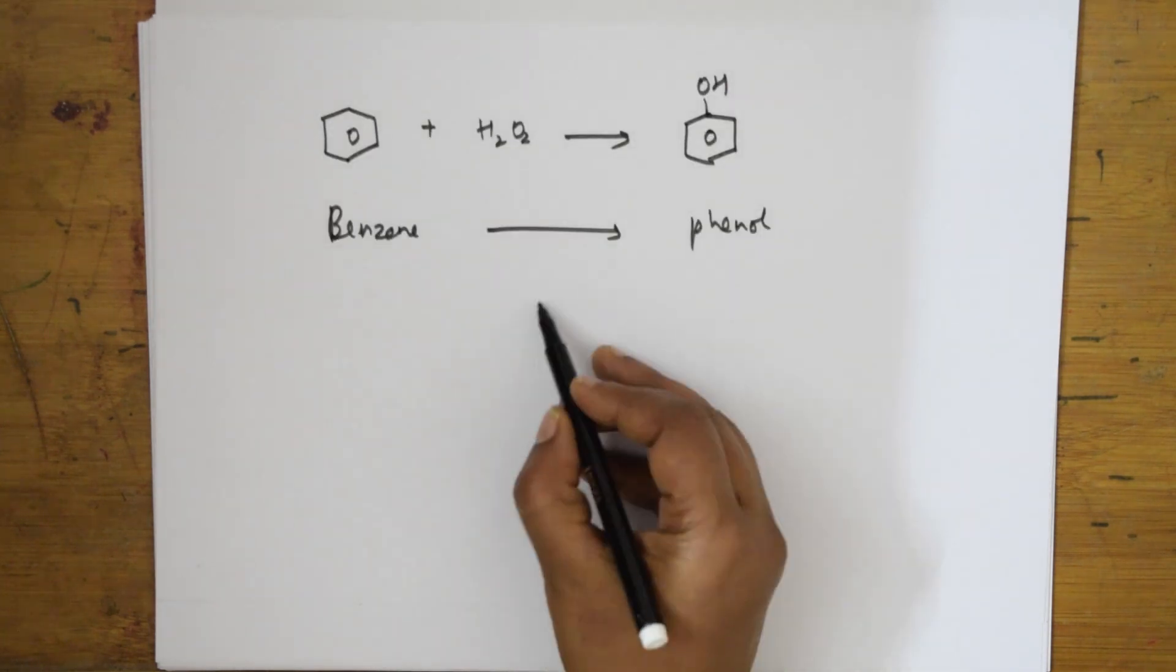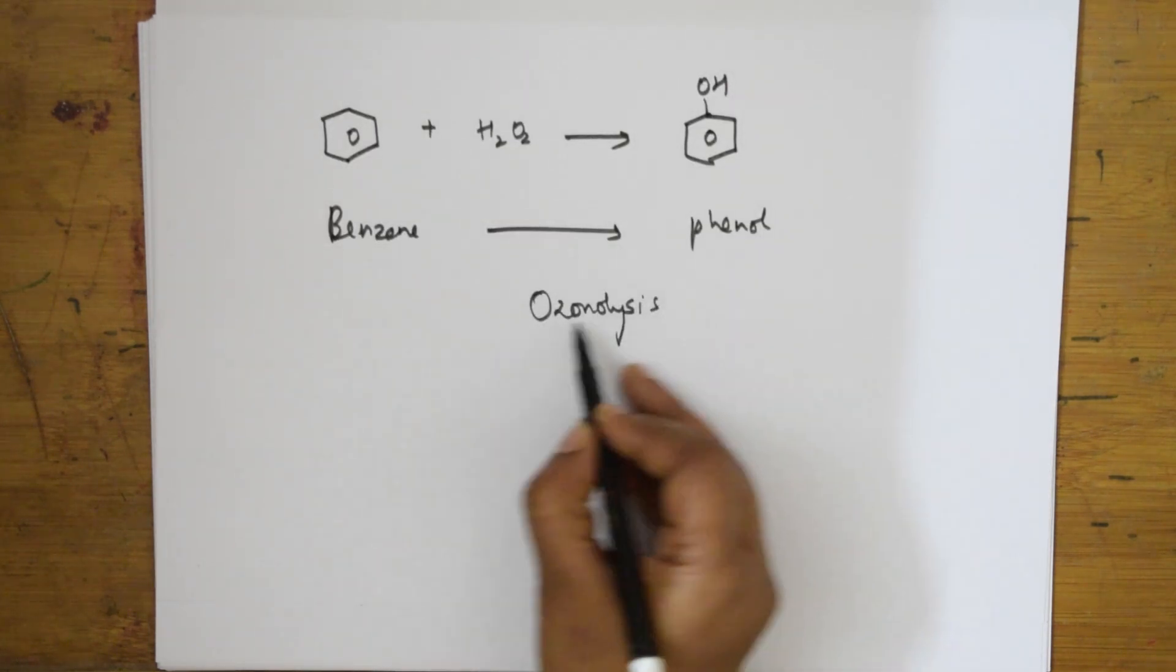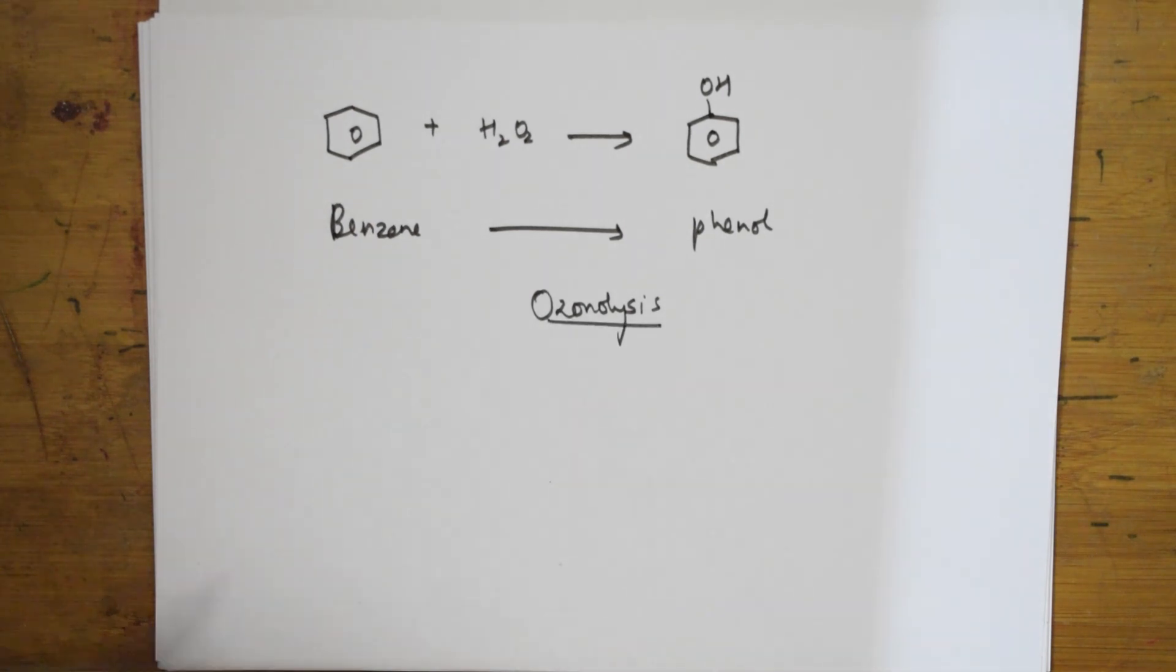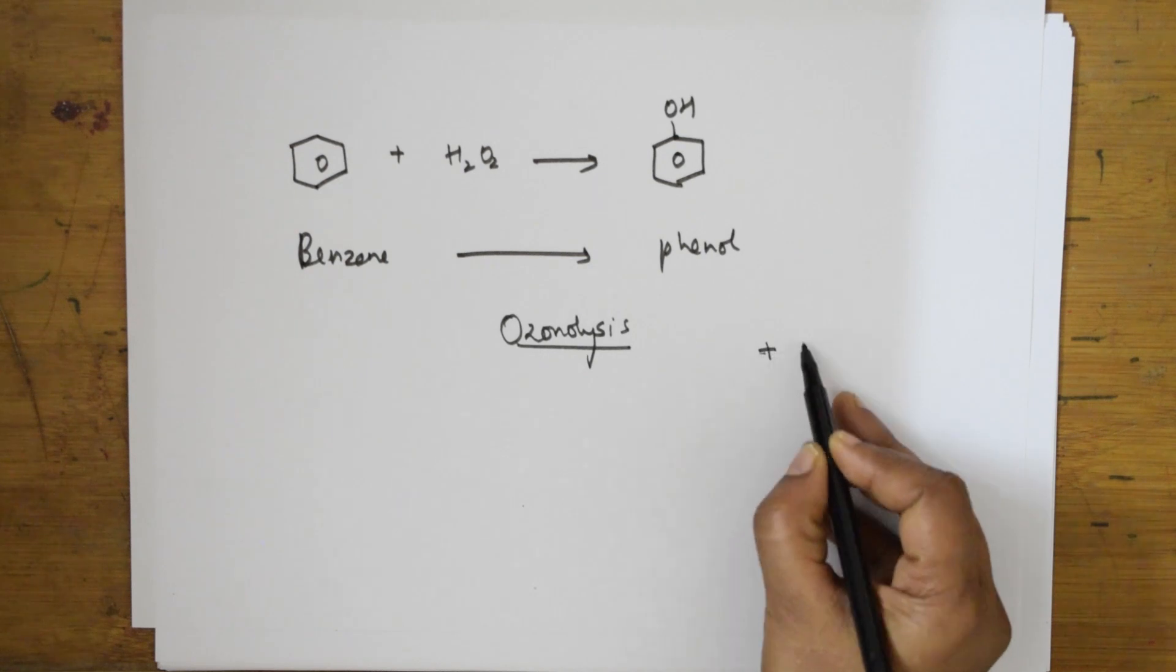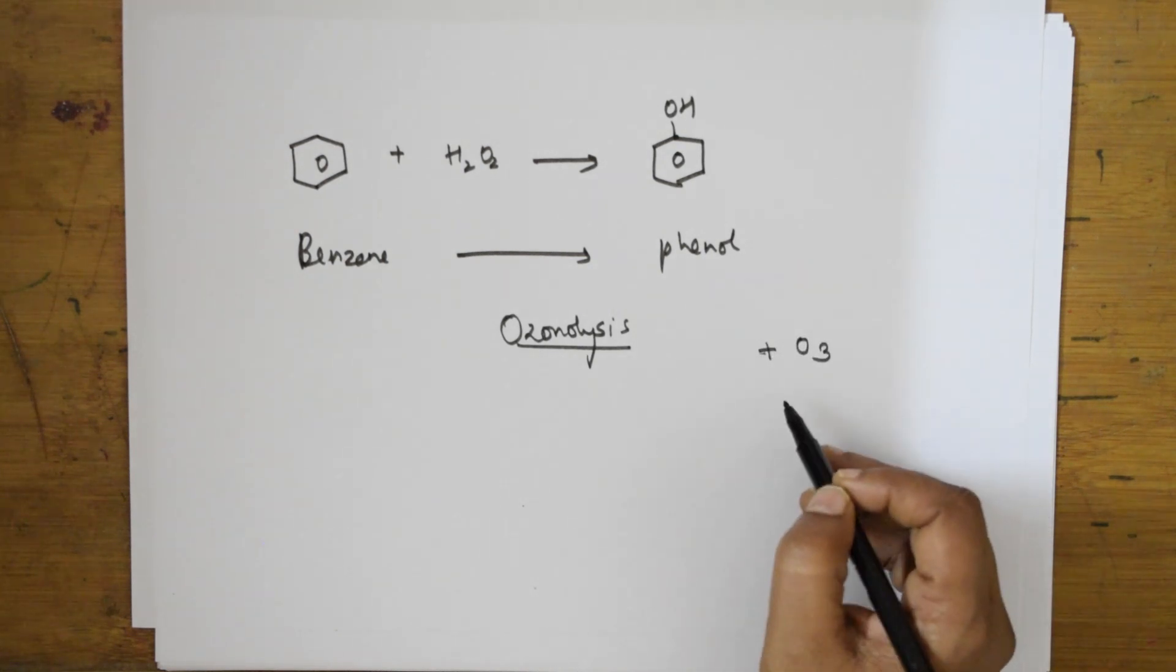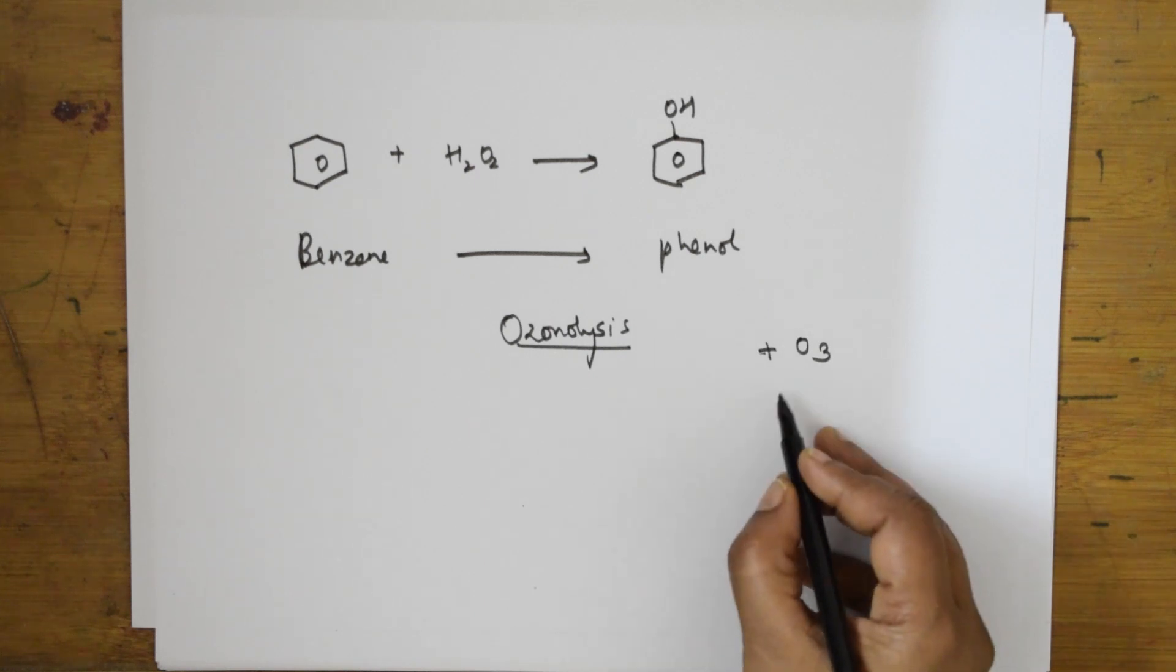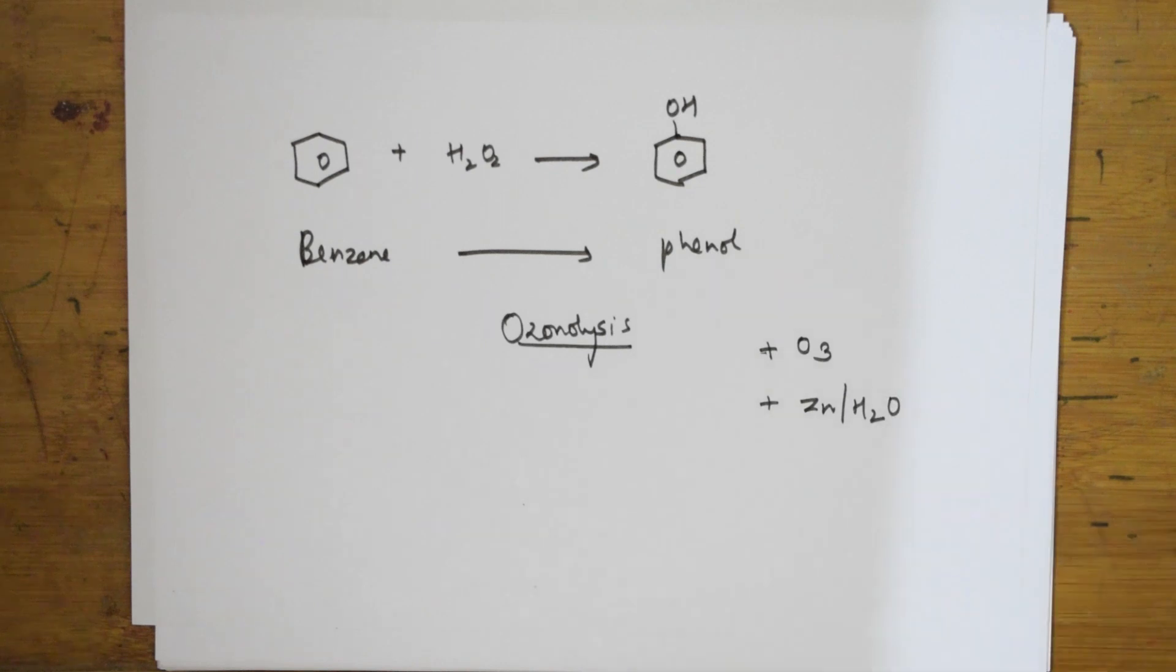Now I have to come back to the next type of reaction, that is ozonolysis. Ozonolysis also comes into oxidation reaction only. What is ozonolysis? We have already seen the mechanism. Ozonolysis is addition of ozone, and further what we do, once we add ozone we are going to allow it to undergo reduction in the presence of zinc.